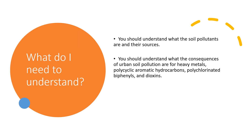What do you need to understand? By reading chapter five sections 5.1, 5.2, and 5.3, I'd like you to use that information to understand what the soil pollutants are and their sources, and what the consequences are of urban soil pollution for the categories: heavy metals, polycyclic aromatic hydrocarbons (PAHs), polychlorinated biphenyls (PCBs), and dioxins. It is heavy metals in particular that we're going to consider in the lab class for the next few weeks.